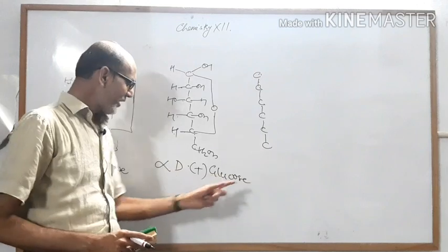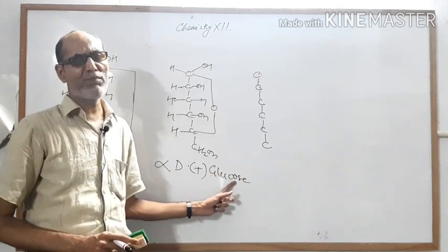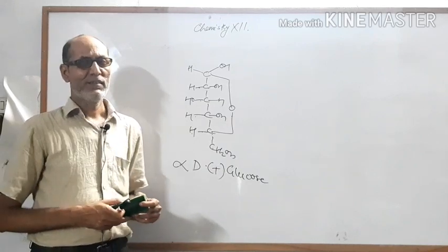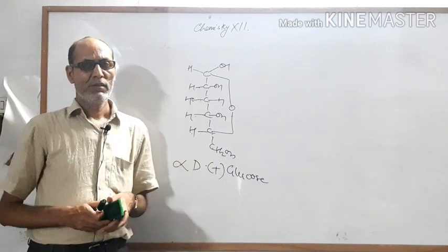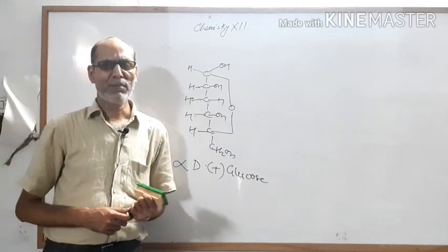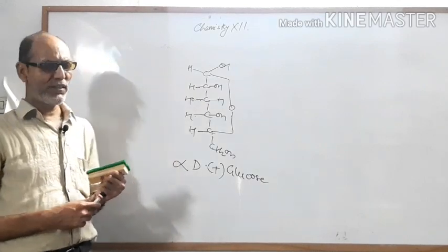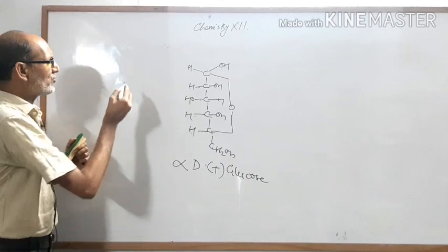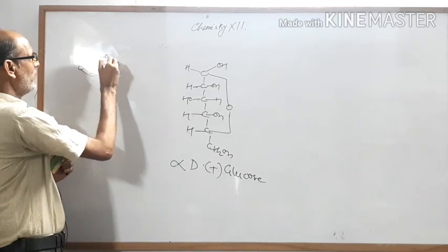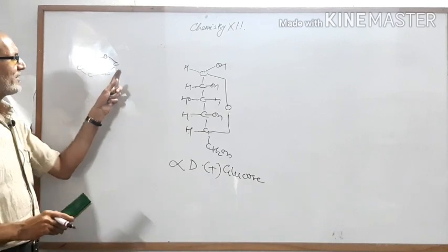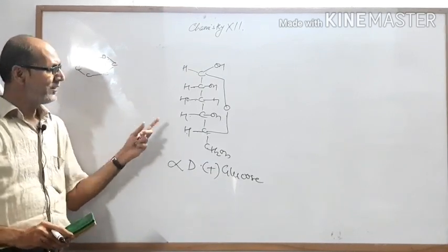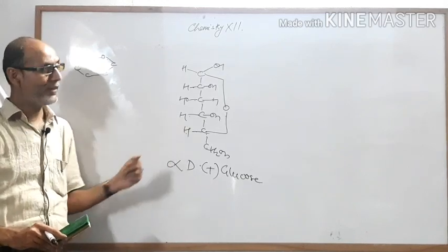Now the third type of structure is the Haworth projection formula. Another name for it is the pyranose structure of glucose. A pyranose is a six-membered ring in which five carbons and one oxygen are present. This is the hexagonal ring used in the Haworth formula, and it is drawn on the basis of the Fischer projection formula.